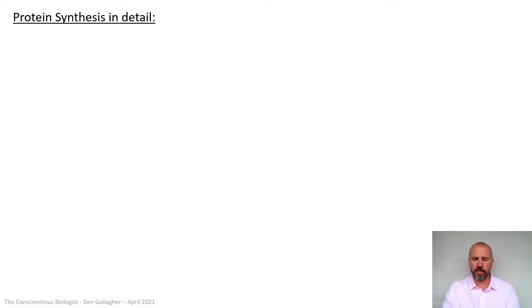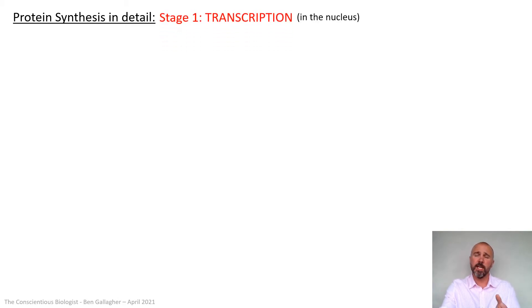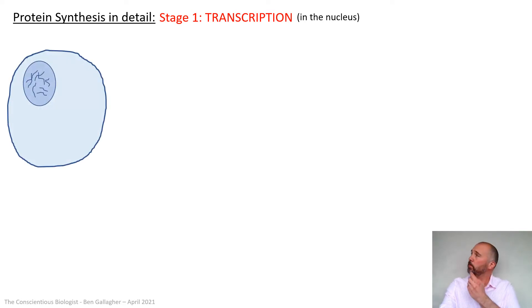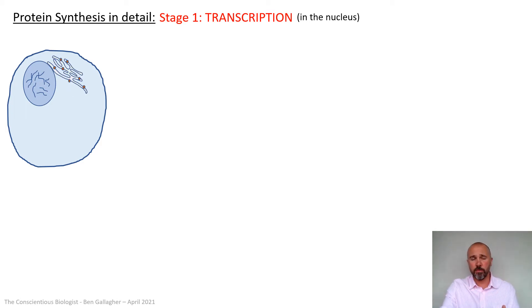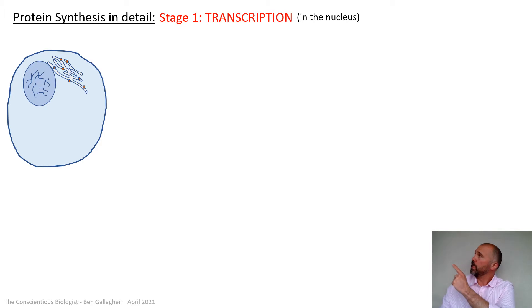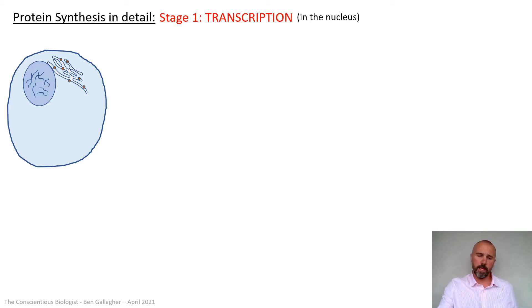We're not going to waste time on GCSE recap — we've covered that in cell biology. You should know that DNA codes for the amino acid sequence in polypeptides, and how proteins are made. That happens in cells, and the first part of protein synthesis, called transcription, happens in the nucleus. In a eukaryotic cell, we've got the membrane, the cytoplasm, the nucleus, and the chromosomes made of DNA inside. The thing that performs protein synthesis is the ribosomes — those red blobs on the rough endoplasmic reticulum just outside the nucleus.